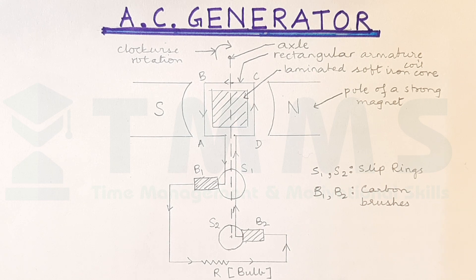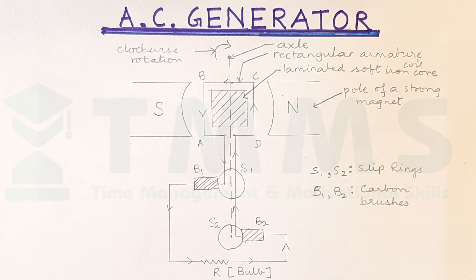So, look at the labels carefully. See the axle. See the clockwise direction of rotation. See the polarity of the strong magnet. Laminated soft iron core. Rectangular armature coil. Can you see how we write S1 and S2. They are the coaxial slip rings. B1 and B2. They are the carbon brushes. And then we have the bulb.